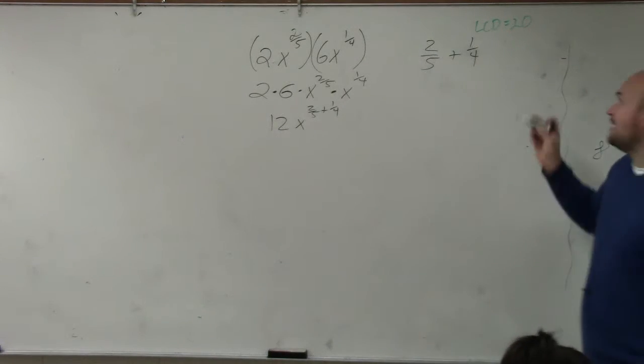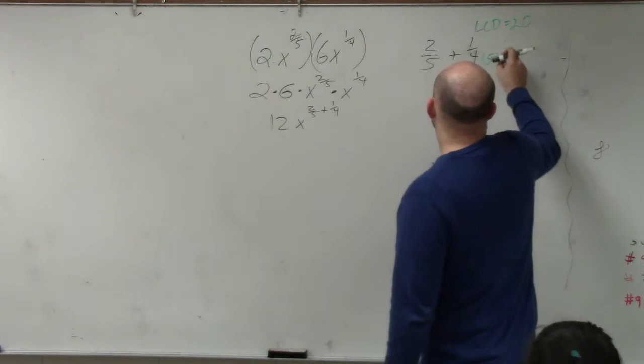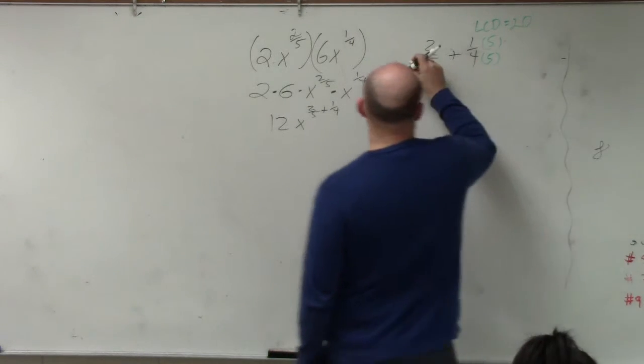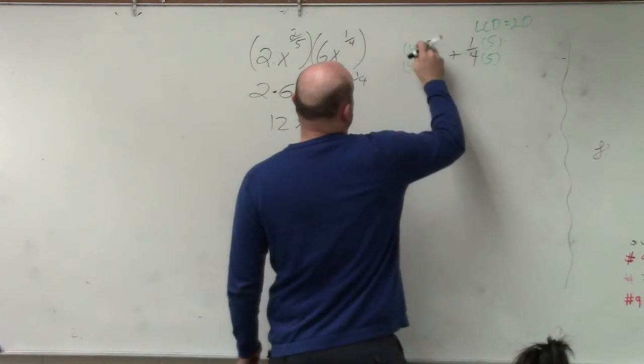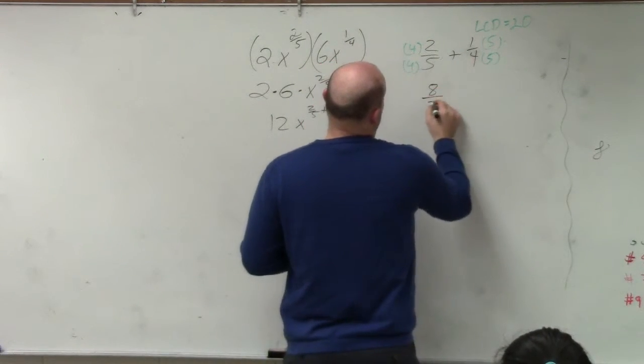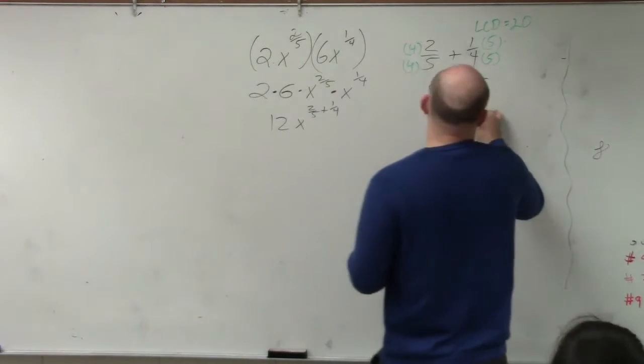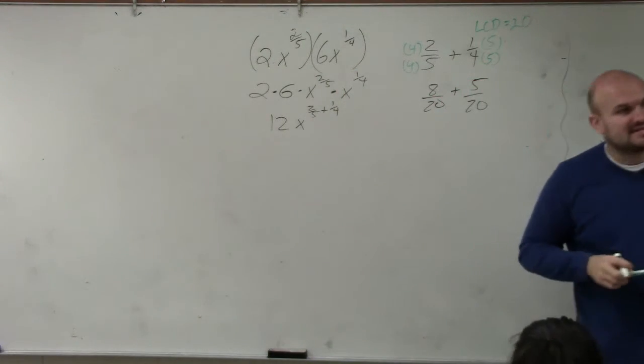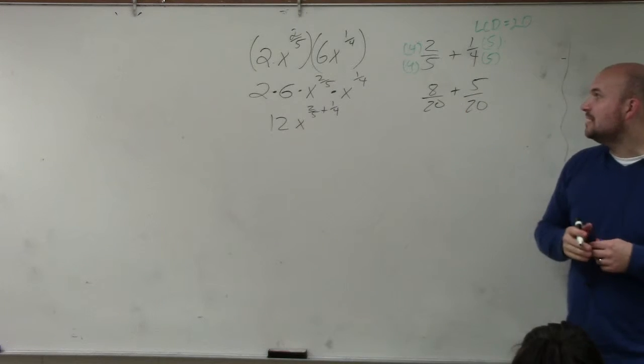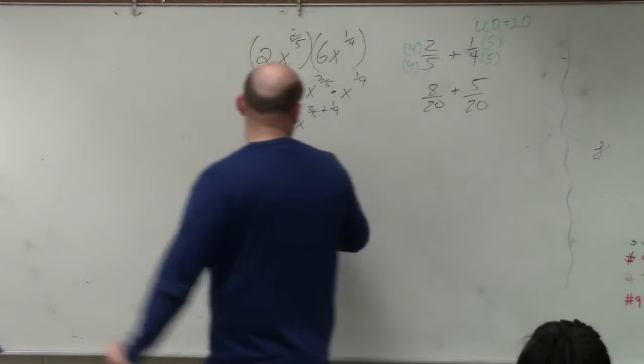So now I just need to multiply by multipliers. So I'll multiply by 5 over 5 and 4 over 4 to produce equivalent fractions, which is 8 over 20 plus 5 over 20. Now they have the same denominator, so now I can simply add them.